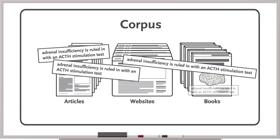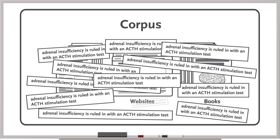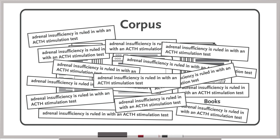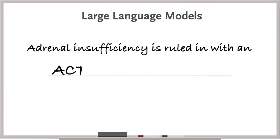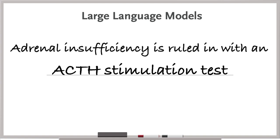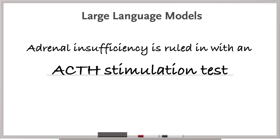So, if the corpus contained many occurrences of the sentence, adrenal insufficiency is ruled in with an ACTH stimulation test, then it will respond with an ACTH stimulation test to the prompt, adrenal insufficiency is ruled in with blank.